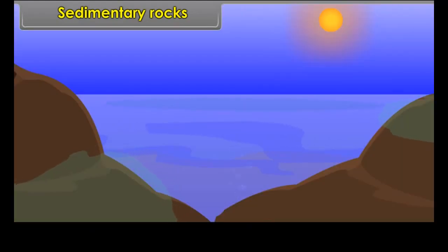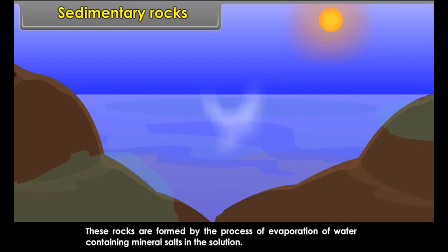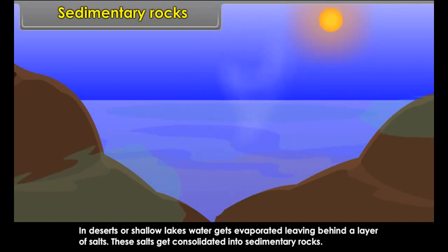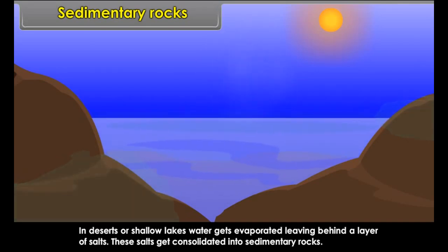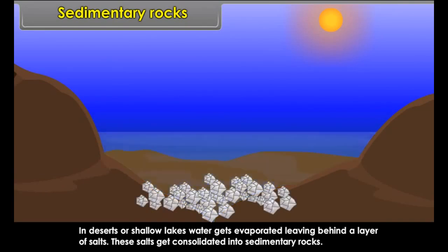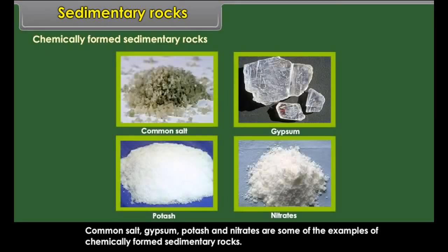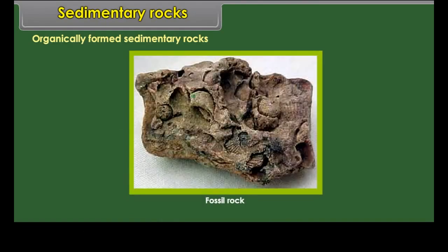Mechanically formed sedimentary rocks. When rocks are exposed to weather changes and other agents of erosion, they are broken and carried away to a site where the material is deposited in layers, forming this type of rock. Sandstone, shale, clay, gravel, etc. are examples of such rocks.